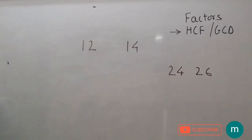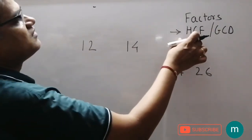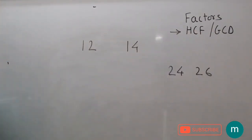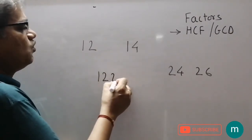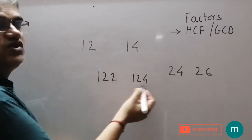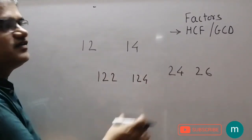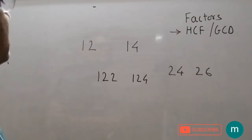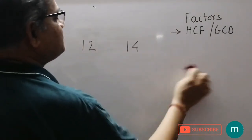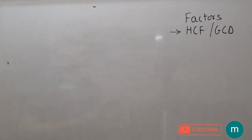These are consecutive even numbers. These are the highest common factor you can do — the greatest common factor. HCF and LCM: we have to apply two numbers such as 122 and 124. These are consecutive even numbers. You can use those numbers. The other numbers are also consecutive even numbers.